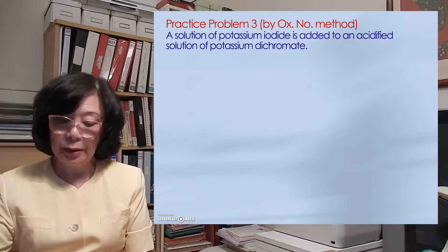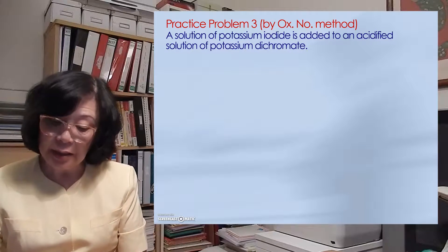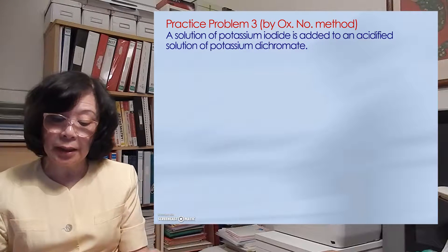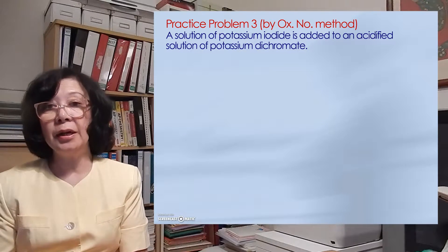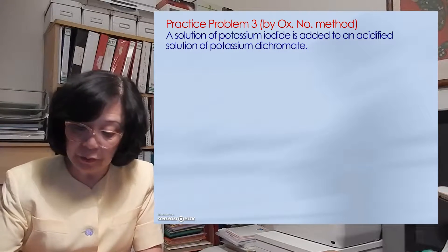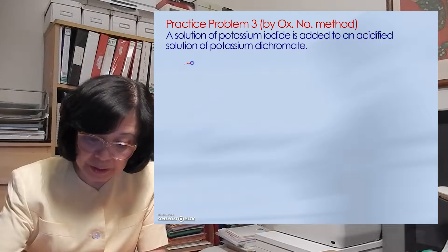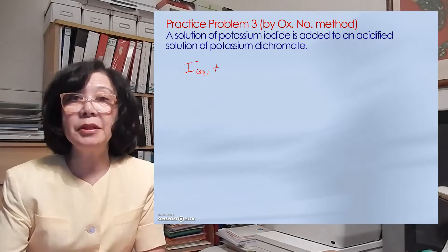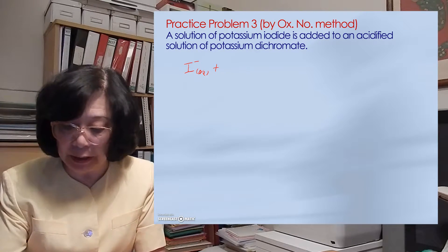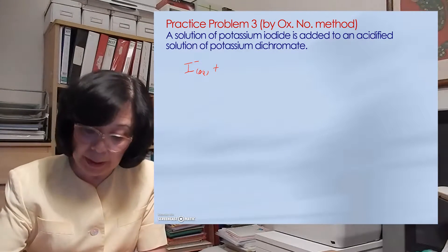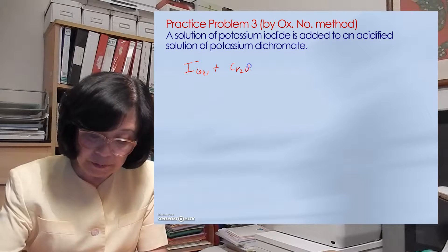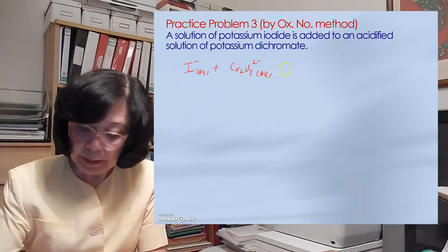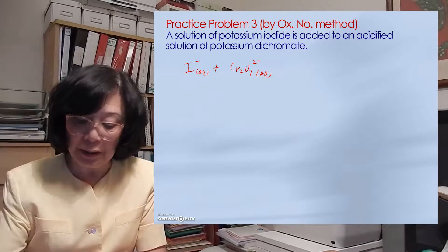Here's a problem. A solution of potassium iodide is added to an acidified solution of potassium dichromate, and we shall do it by the oxidation number method, or the electron transfer method. We started with iodide solution — this is aqueous — and the potassium is a spectator ion, so I'm not going to write it out. Added to potassium dichromate solution, Cr₂O₇²⁻, the orange solution. I'm going to write about the hydrogen ion later on.